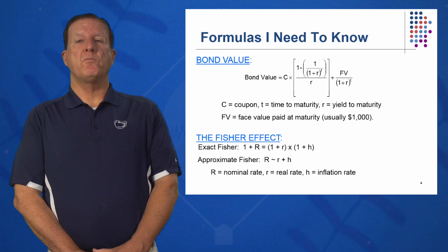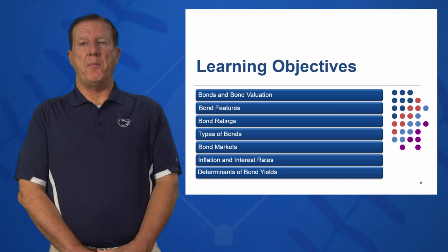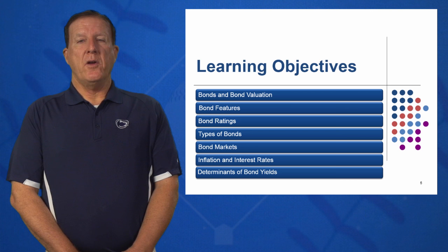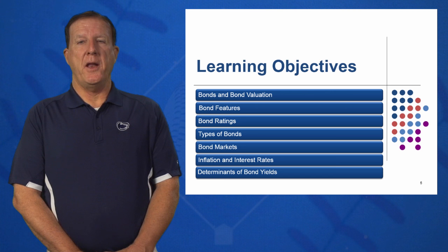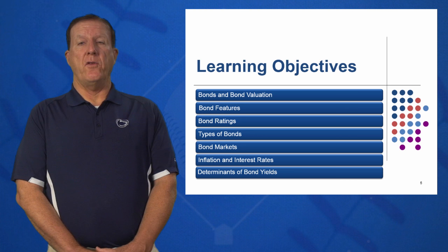There are seven learning objectives in session seven. First, we're going to talk about bonds and bond valuation — how do we value a bond using that one formula? Second, what are some features of bonds and terminology? It's a whole new language we need to learn to discuss bonds intelligently. Third, who rates bonds? Several prominent companies look at bond ratings, examining the company's financial health and rating the bond accordingly.